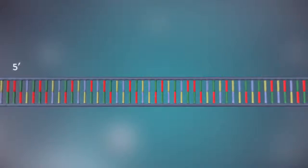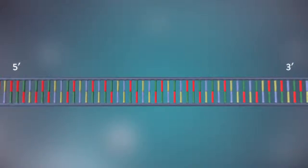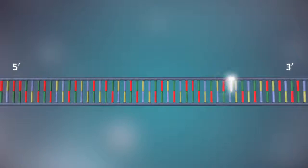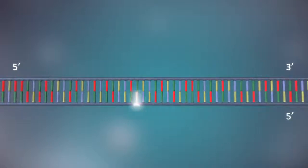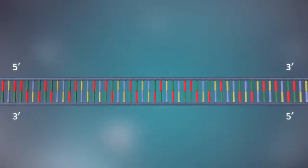Each strand has a five prime end and a three prime end. The two strands run in opposite directions. This determines how each strand of DNA is replicated.